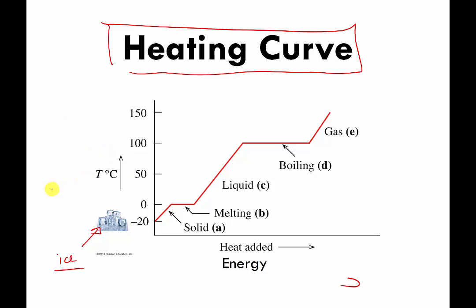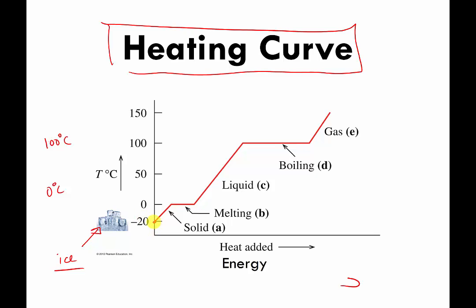Remember that water freezes and melts at 0 degrees Celsius, and water boils and condenses at 100 degrees Celsius. Let's start by thinking of ice cubes that are very cold — at negative 20 degrees Celsius, sitting in the freezer. As we add more and more heat or energy to our ice cubes, the temperature rises and they get warmer and warmer. They're still ice cubes because we're below 0 degrees Celsius, somewhere on this diagonal.